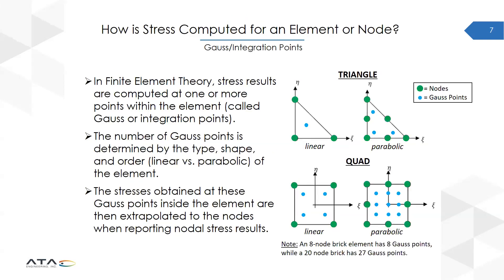First, it's wise to remind ourselves of how stress is computed for a node or an element. In finite element theory, stress is computed at the Gauss points, whereas displacement is computed at the nodes. The number of Gauss points is determined by the type, shape, and order of the element. You can see in the image on the right, we have two different shaped elements — a triangle element and a quad element — showing the linear and parabolic form for each, giving a different number of Gauss points.